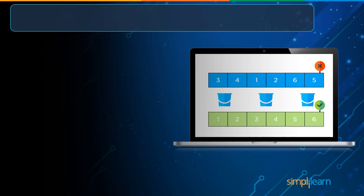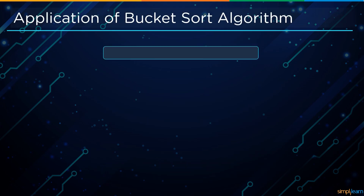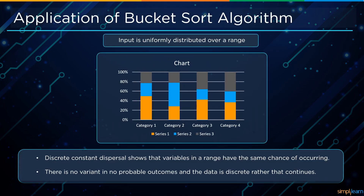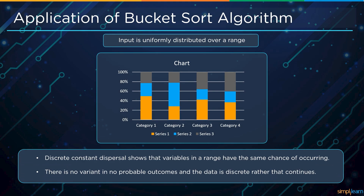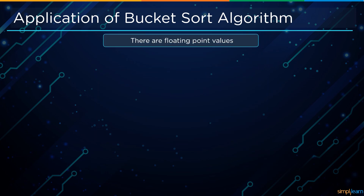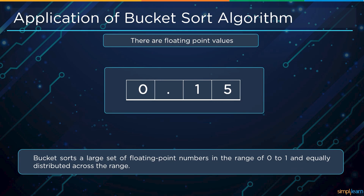The bucket sort algorithm has two main applications: first, when the input is uniformly distributed over a range; and second, when there are floating point values to be sorted. Now let us go through a practical demonstration of bucket sort algorithm.